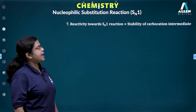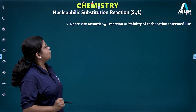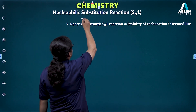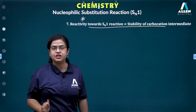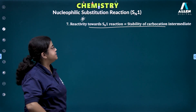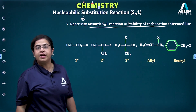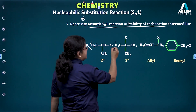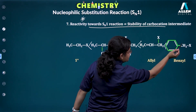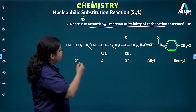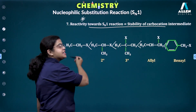This is a very important point from which questions are asked in competitive exams: SN1 reactivity is directly proportional to carbocation stability. Greater the stability of the carbocation, greater will be the rate of the SN1 reaction. The order is: 1° < 2° < 3°; allylic is resonance-stabilized, and benzylic is most resonance-stabilized. This order is directly proportional to carbocation stability factors like resonance, hyperconjugation, and the +I effect.